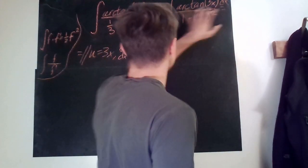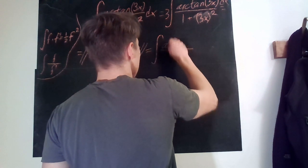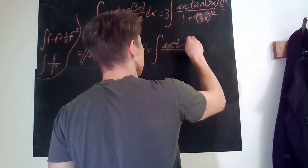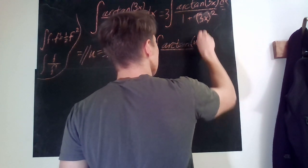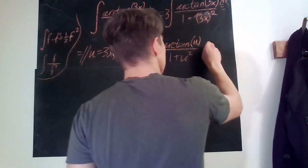So dx times 3 is just du. So it just becomes super simple. It just becomes arctan of u over 1 plus u squared du.